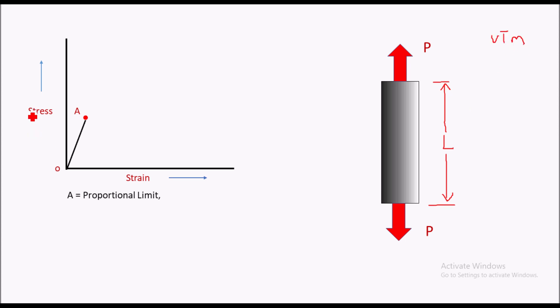Now here we have a stress-strain curve. Stress is plotted on the y-axis and strain is plotted on the x-axis. The first point onto this curve is called point A, which is called the proportional limit. So why is it called the proportional limit? If we see the graph...